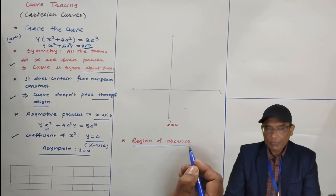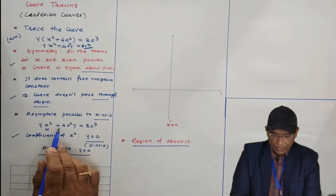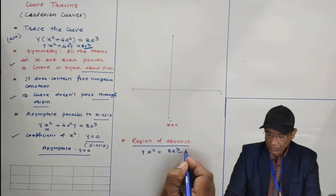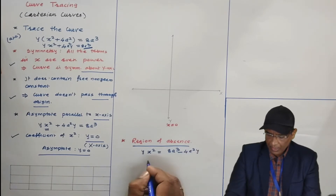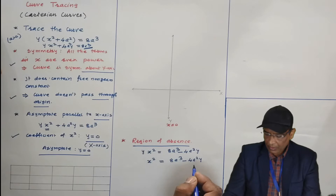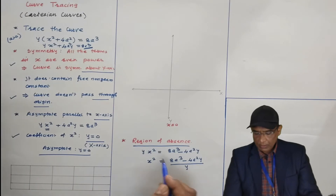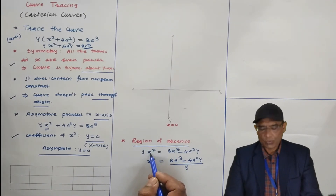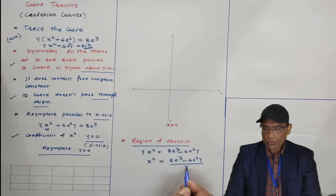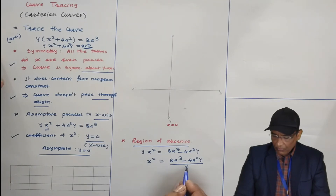Now, how to find the region of absence — the region in which the curve is absent. From the equation, we can write x² = (8a³ − 4a²y) / y. For which values of y is x² negative? For y less than 0, the numerator 8a³ − 4a²y becomes positive (due to minus times minus), but the denominator y is negative, so x² is negative.